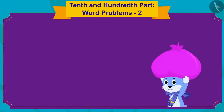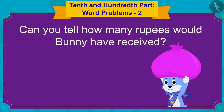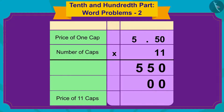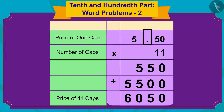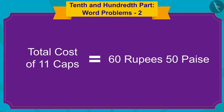Children, if Bunny had sold only 11 caps instead of a dozen caps, can you tell how many rupees would Bunny have received? You can stop the video and find the answer. We will first multiply 5.50 with 11. And now, because there are two digits after the decimal point in 5.50, we will write the decimal point in the answer accordingly. The total cost of 11 caps would be 60 rupees and 50 paise.